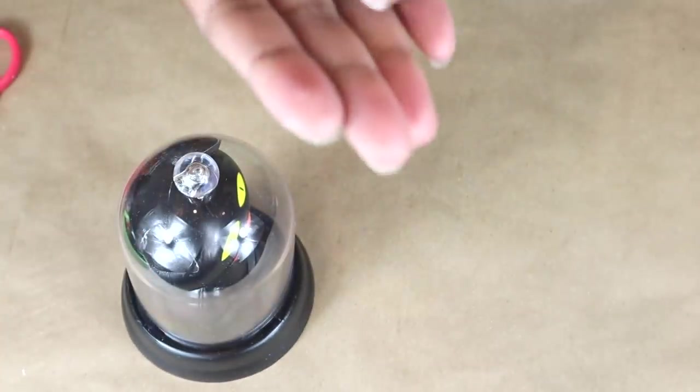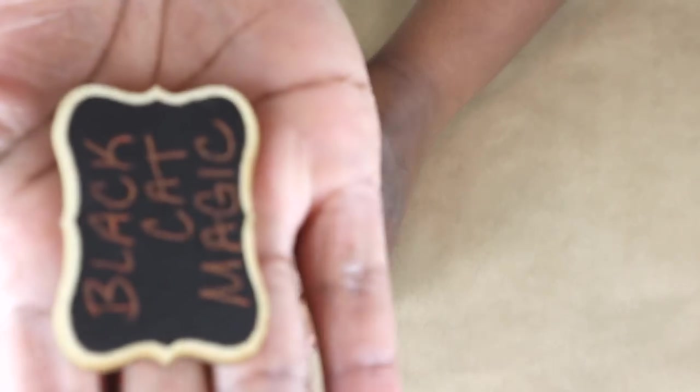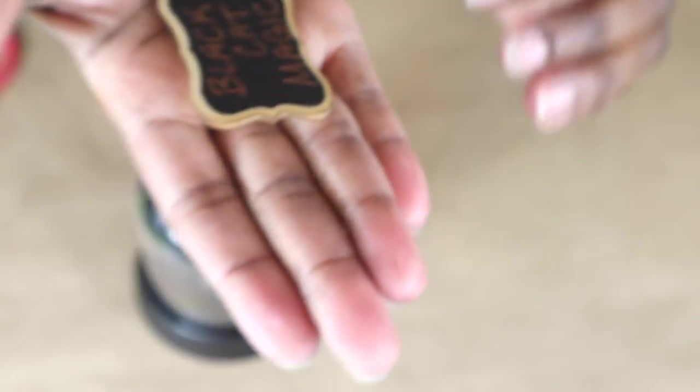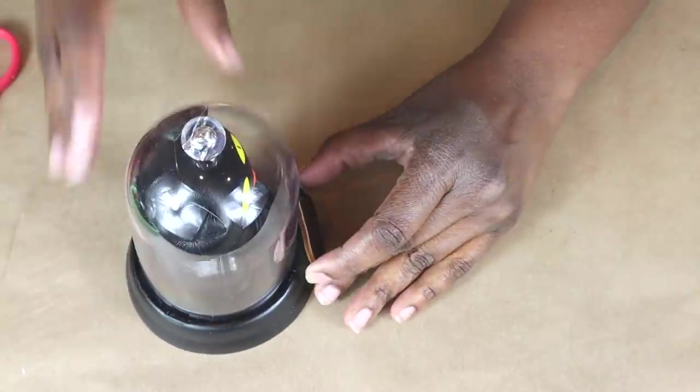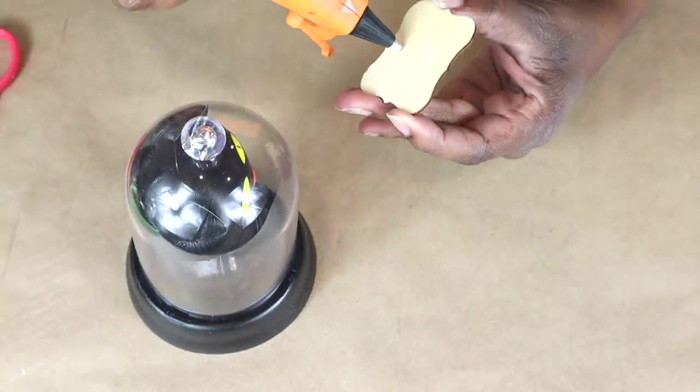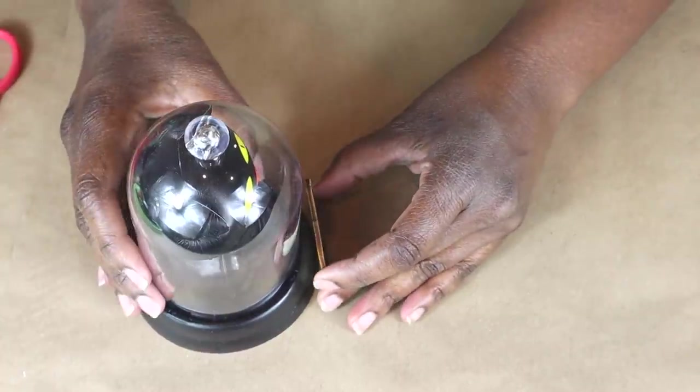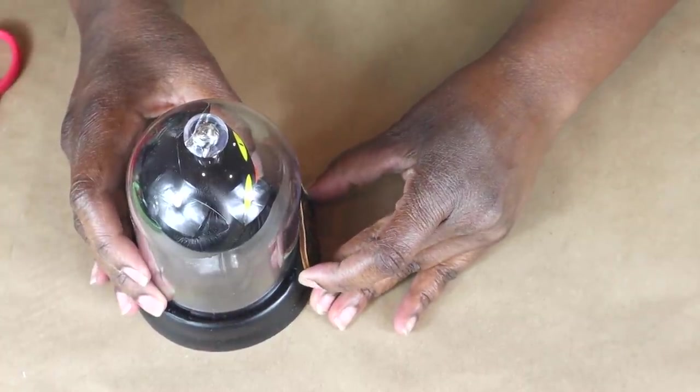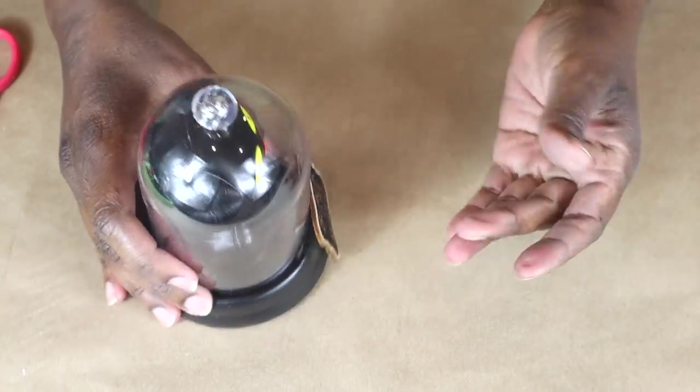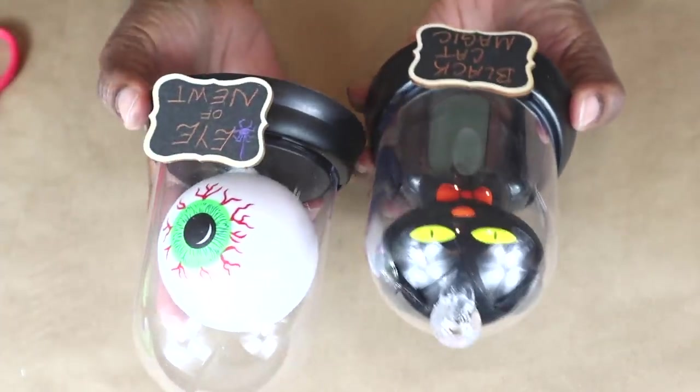I wrote black cat magic on one of the little chalkboards. And again, I'm going to hot glue it to the base of this cloche. And now they both are done.